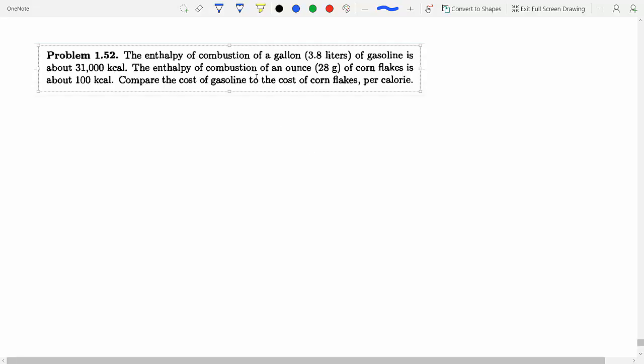The enthalpy of combustion of a gallon, every gallon is 3.8 liters, of fuel is about 31,000 kilocalories. For cornflakes, an ounce of cornflakes is 100 calories. Let's compare the cost of gasoline to the cost of cornflakes.